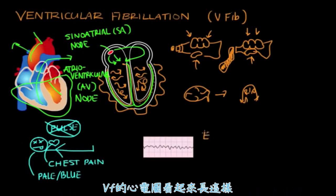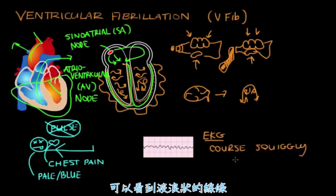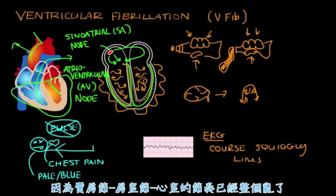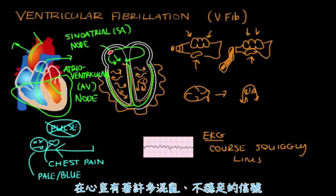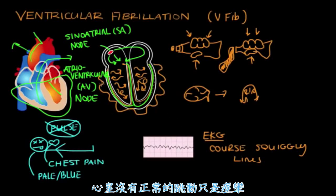An EKG of someone in V-fib looks like coarse squiggly lines. This is because you lose smooth signaling from the SA node to the AV node to the ventricles. Instead, in the ventricles you have this chaotic, erratic signaling — which looks like coarse squiggly lines on the EKG. The ventricles are just spasming.